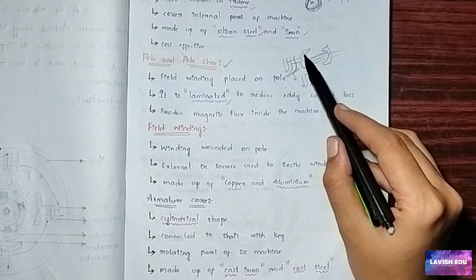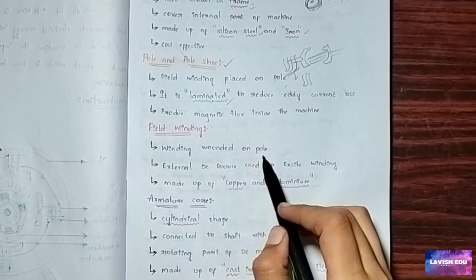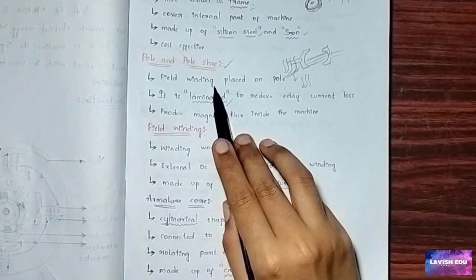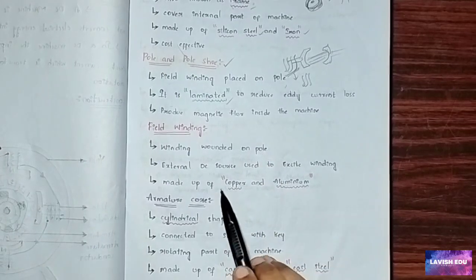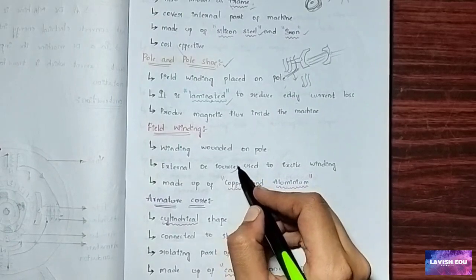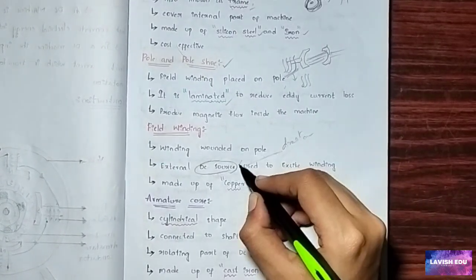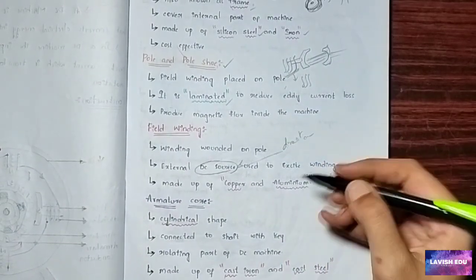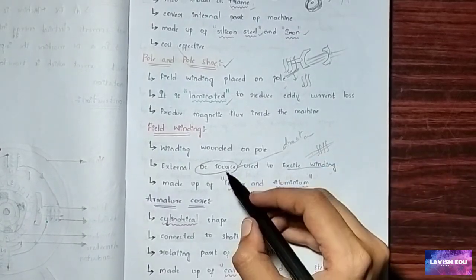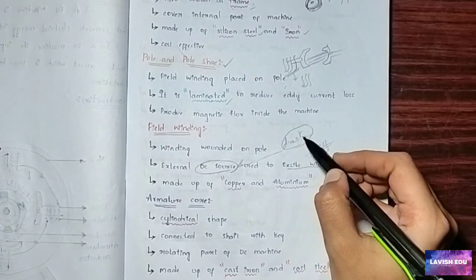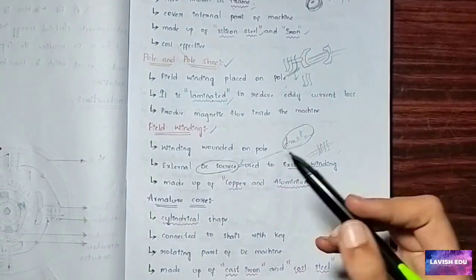Now we will see about field winding. Field winding is a winding wound on the pole. The winding is wound on the pole using an external DC source to excite the winding. We give direct current from an external DC source to excite the winding — meaning to energize the winding inside the machine. Field winding is made up of copper or aluminium.